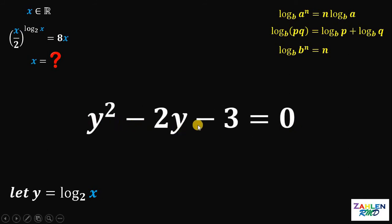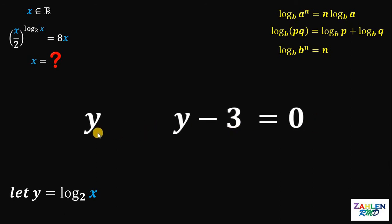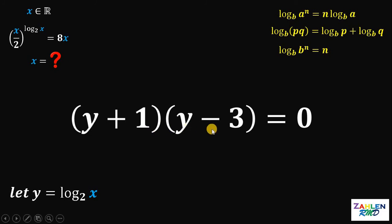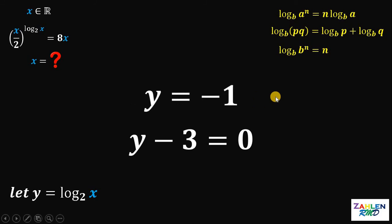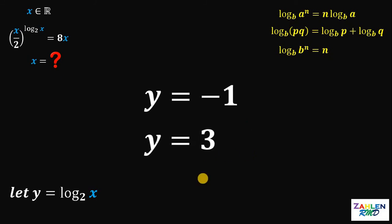First, let's equate the equation to 0, giving us y squared minus 2y minus 3 equals 0. This factors as (y + 1)(y − 3) = 0. Since it equals 0, at least one factor must be 0, so y + 1 = 0 or y − 3 = 0. Solving each: y equals negative 1, or y equals 3.